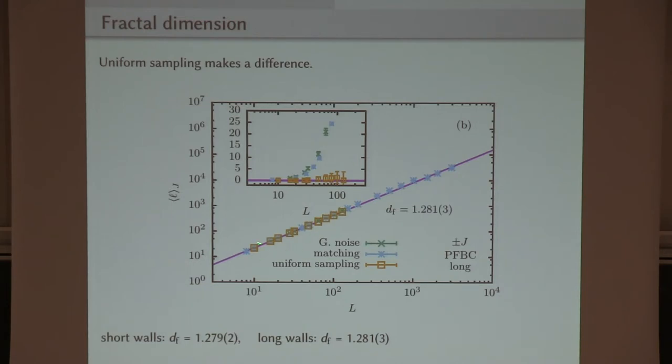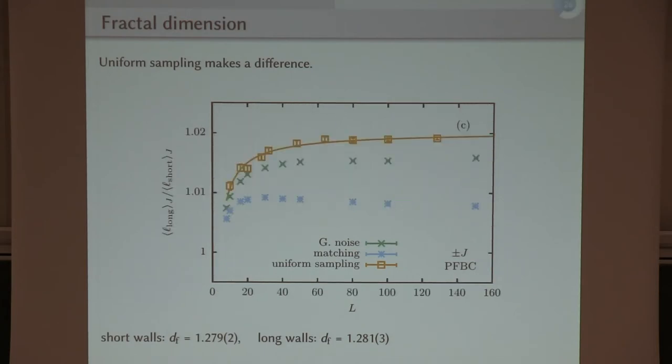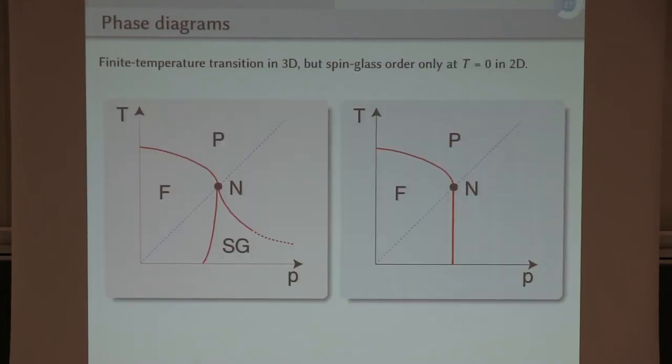And so to make a long story short, there are compatible fractal dimensions for these two definitions of the domain walls. So this is shown here. That's the ratio of the long and the short definition which goes to a constant. So we are satisfied that they show the same behavior.